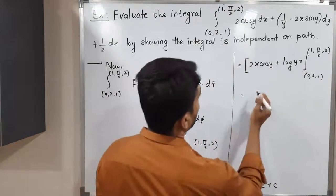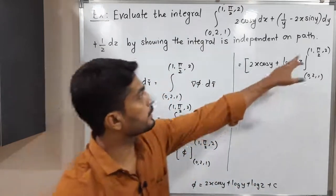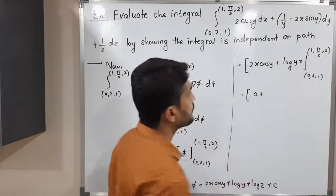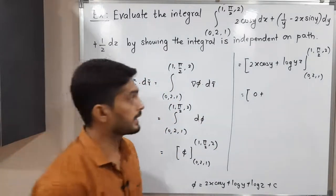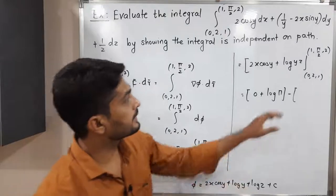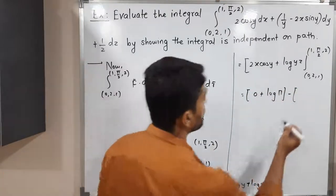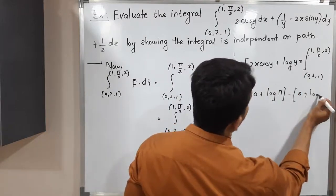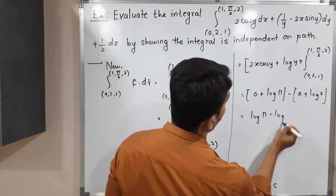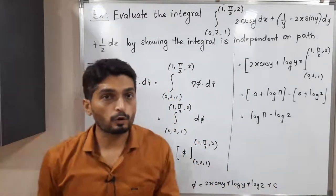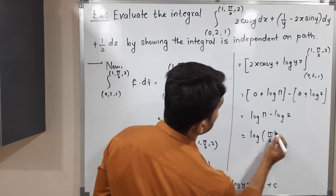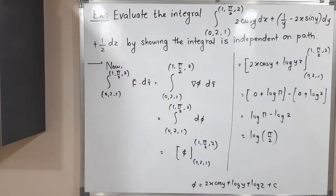Putting the upper limit: x=1, y=π/2, z=2. cos(π/2) = 0 so the first term is 0; log(π/2 · 2) = log(π). Minus the lower limit: x=0 so 2x·cos(y) = 0; y=1, z=1 so log(1·1) = log(1) = 0. Wait, we get log(π) − log(2) = log(π/2). So the required answer is log(π/2).